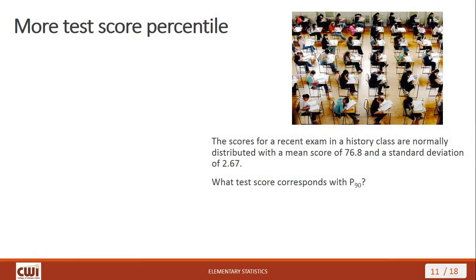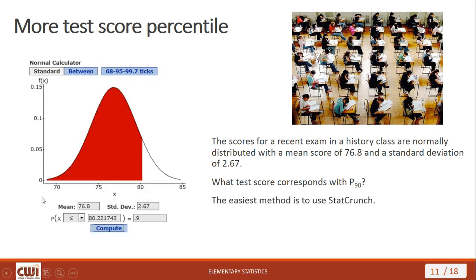Let's look at another example involving the 90th percentile. For the same class, what test score corresponds with the 90th percentile? Using StatCrunch's normal calculator, we enter the mean and standard deviation, select less than or equal to for the area to the left, and enter 0.9 for the area. Hit Compute, and out comes 80.2 — that's the test score corresponding to the 90th percentile.